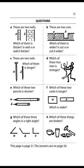Which is wider? Card A is wider. Which of these three angles is a right angle? Angle C is a right angle. Which of these things are broken? The cup, the hammer, and the plate are broken.